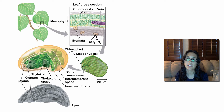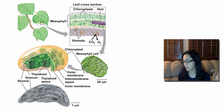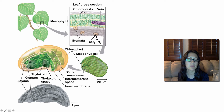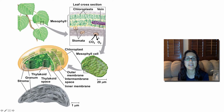Photosynthesis is going to take place in the green parts of the plant, and specifically inside the chloroplast. If you take a look at this picture, we have a zoom-in of the leaves and you can see a tiny little chloroplast found in the mesophyll cells. You can see the veins that transport stuff throughout the leaf and the stomata, which are tiny openings in the leaf that allow carbon dioxide to go in and oxygen to leave.